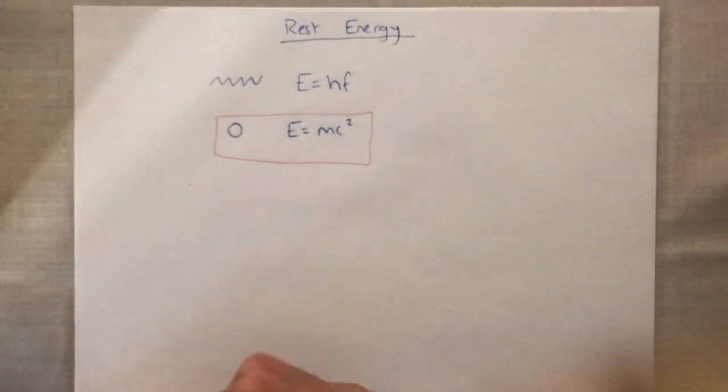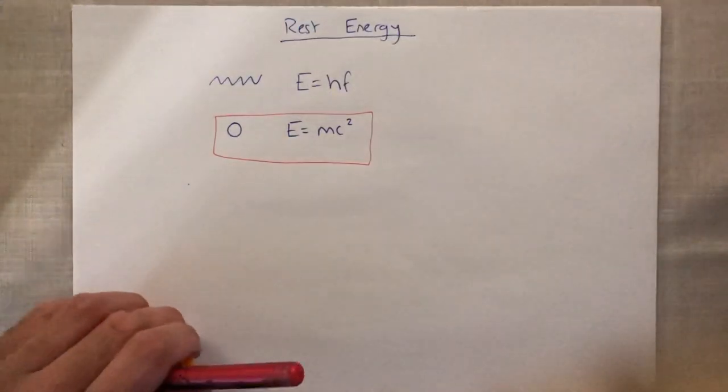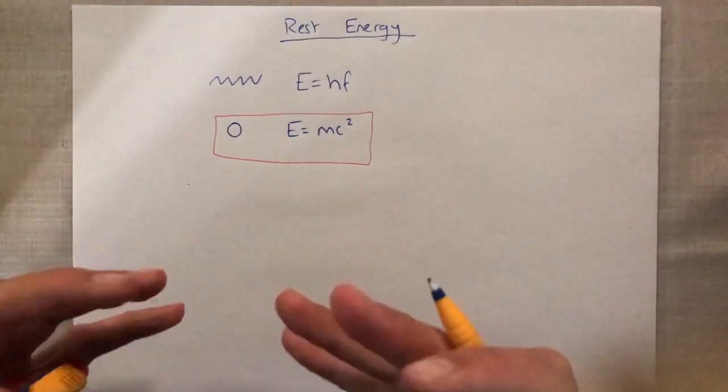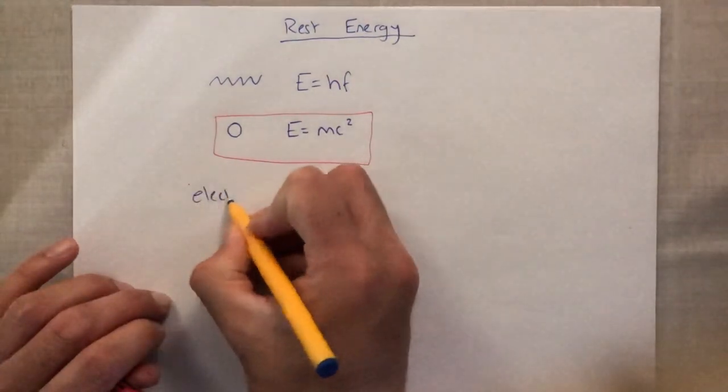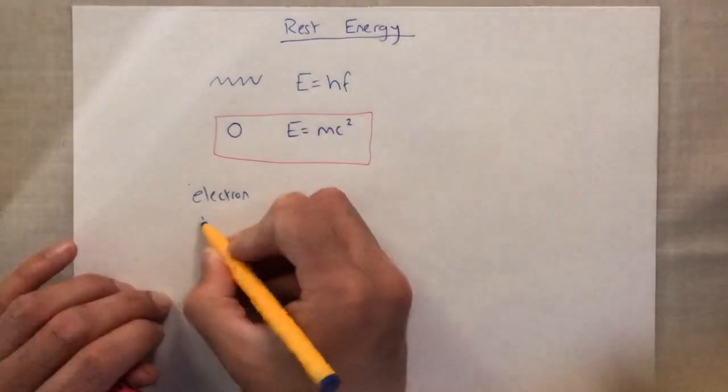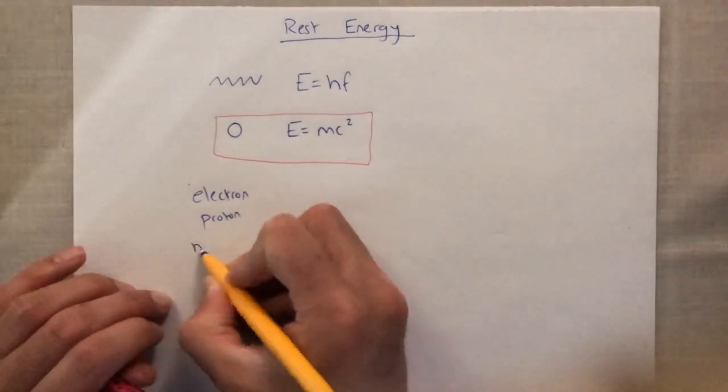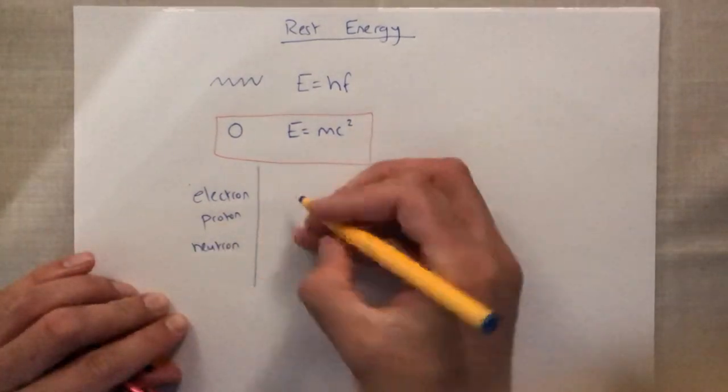So the first thing we're going to do is we're going to have a look at the three main particles that you need to know about at A-level physics. So we've got the electron, we've got the proton, and we've got the neutron.